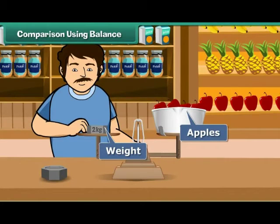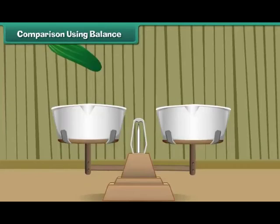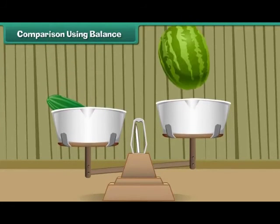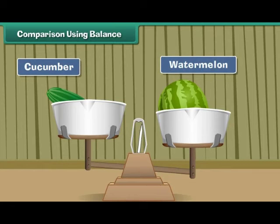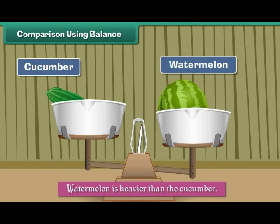The balance can also be used to compare weights. Place a cucumber on one side and a watermelon on the other side of the balance. The side that has the watermelon goes down. It means that the watermelon is heavier than the cucumber.